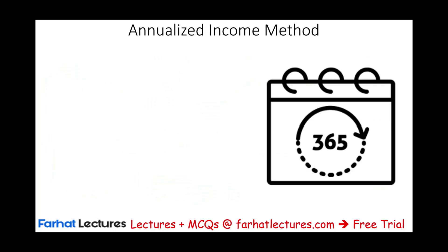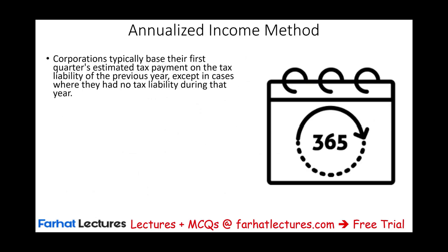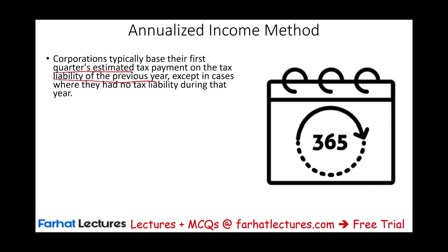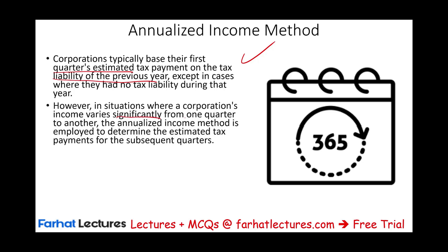Start your free trial today. With the annualized income method, the corporation bases their first quarter estimate on the tax liability of the prior year — that's always allowed. Even if you are a more-than-a-million-dollar company, for the first quarter you are allowed to base it on 25% of the prior year. Now, in a situation where income varies significantly from one quarter to another and your income fluctuates, the annualized income method is used to determine the estimated tax payment for the subsequent quarters.